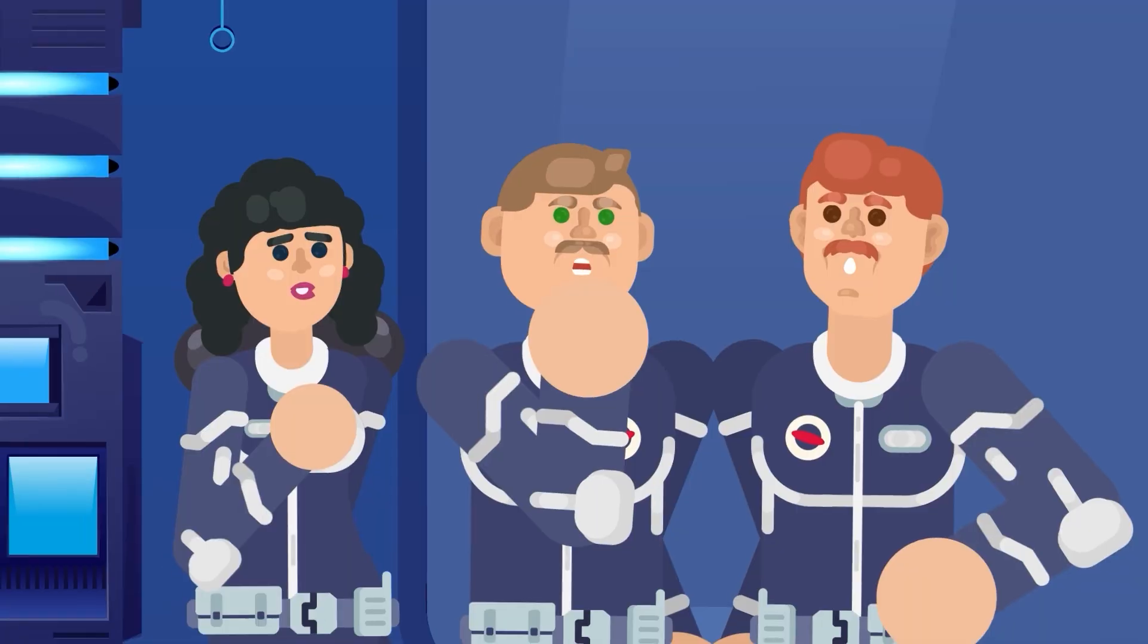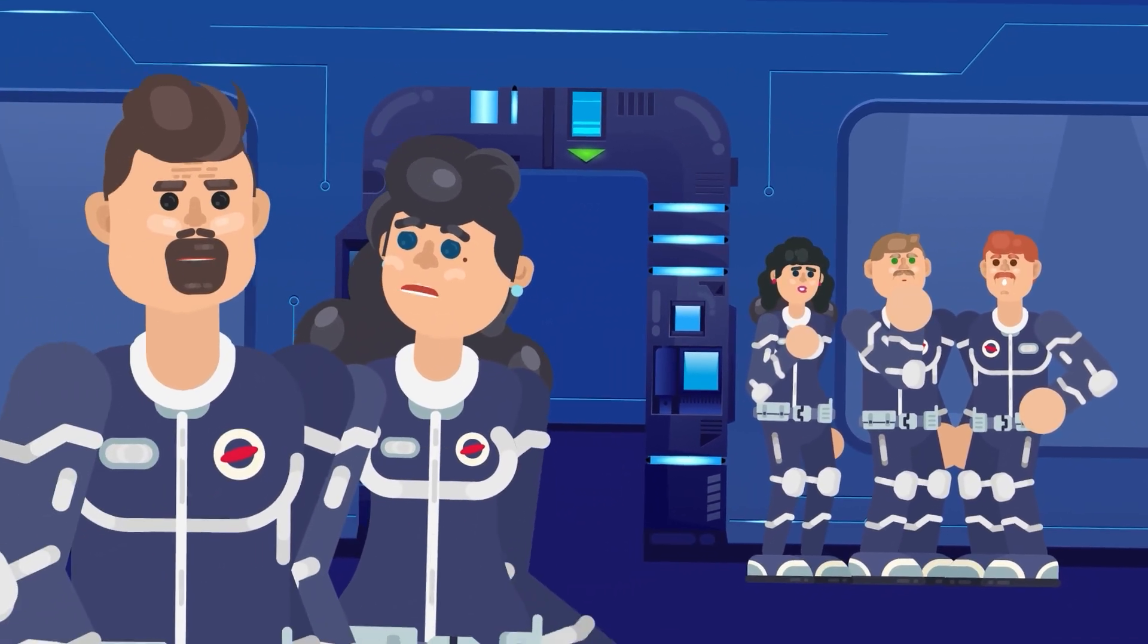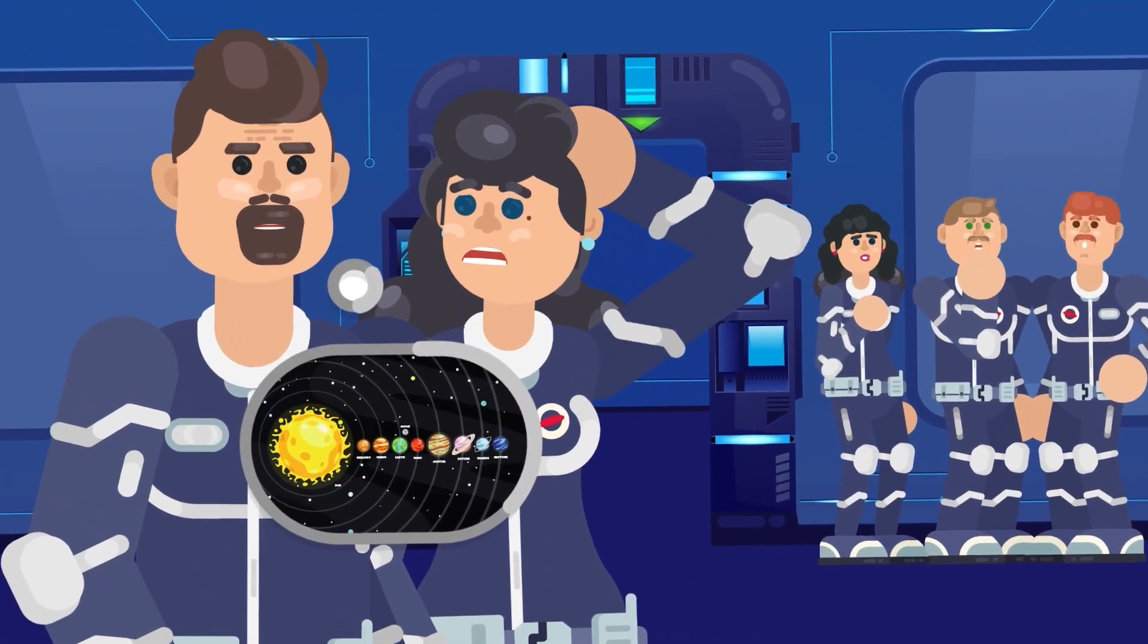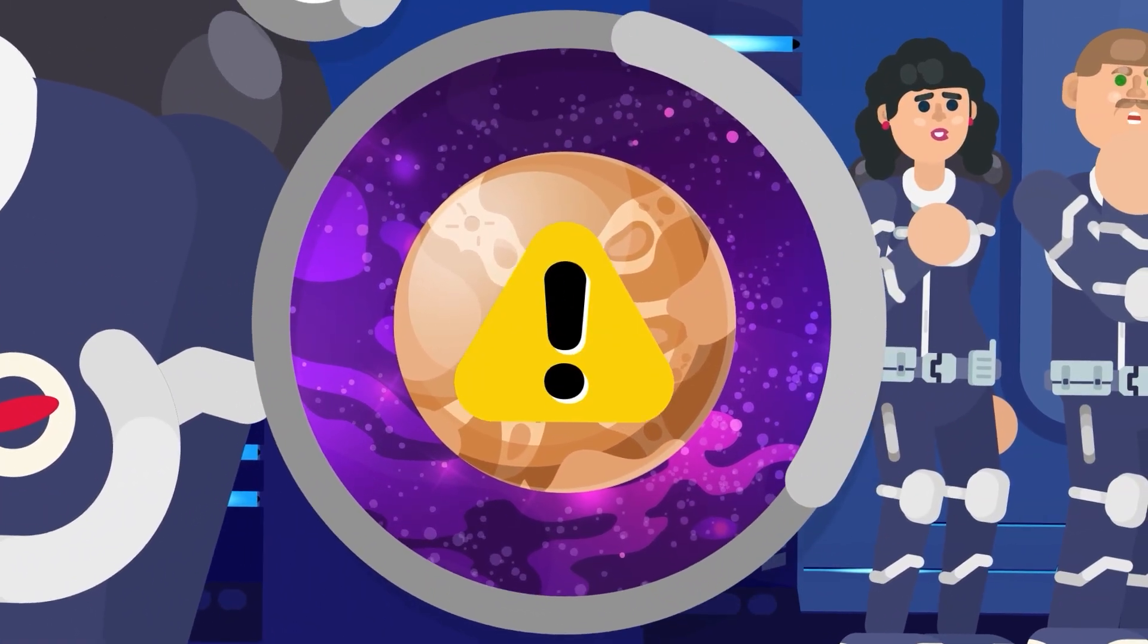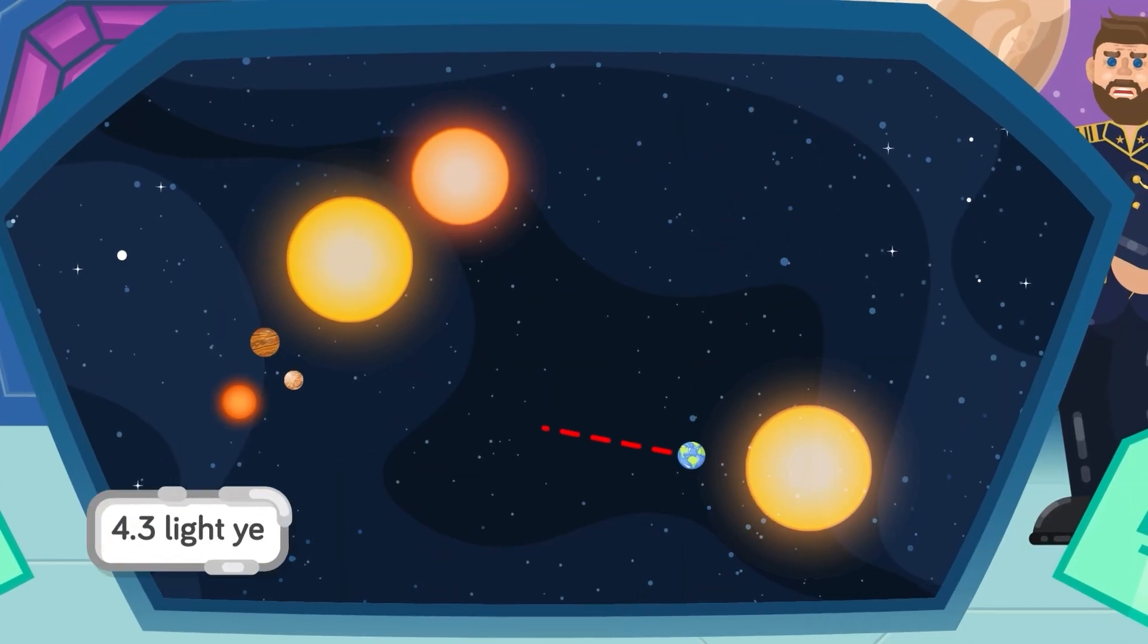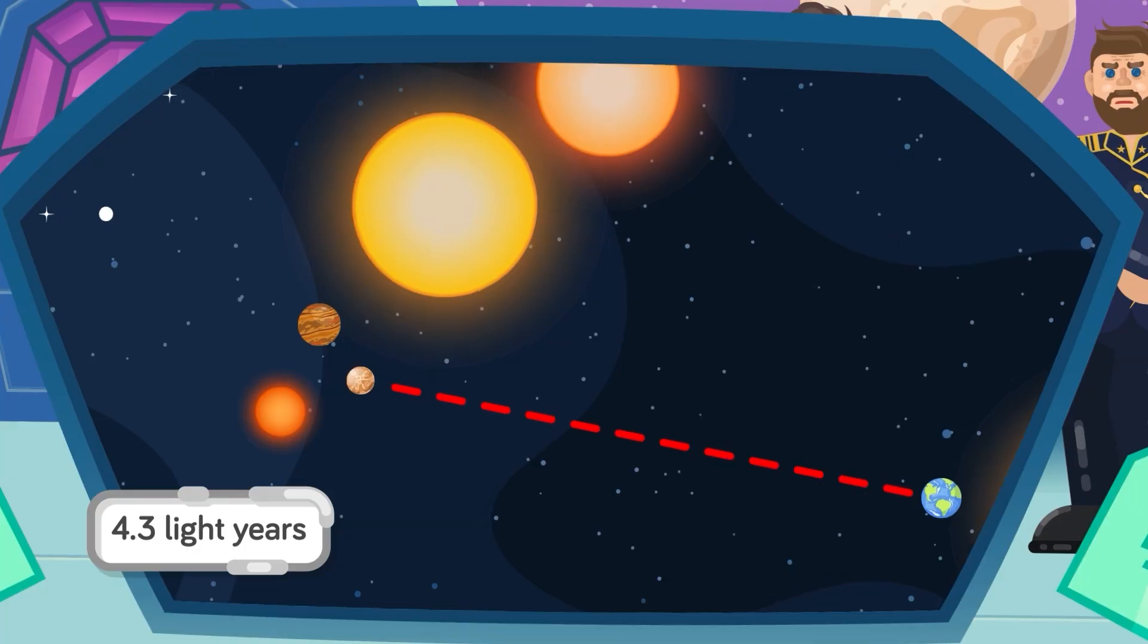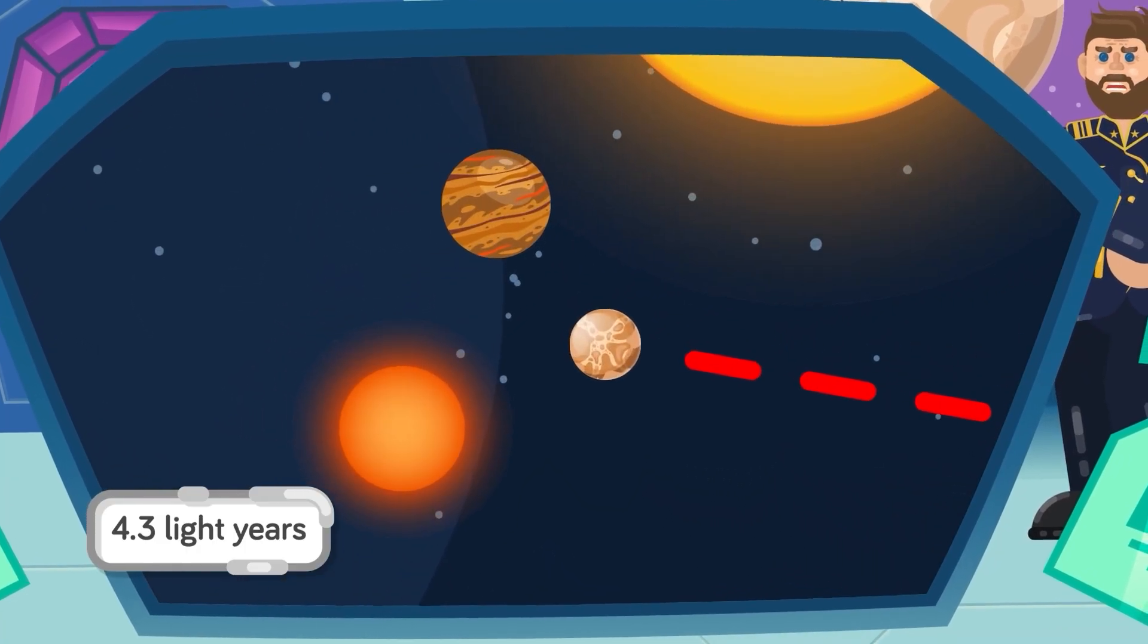Nobody can tell which horror outweighs the other, realizing they've jumped too far and ended up way past the edge of our solar system, or knowing the danger of being so close to this particular planet. Located 4.3 light-years away from Earth, we find Alpha Centauri, the closest star to our own.